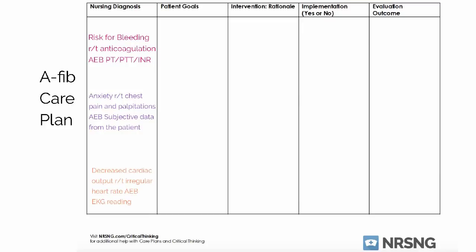The third nursing diagnosis is decreased cardiac output related to irregular heart rate, as evidenced by your EKG reading. Your EKG is going to show that the heart rate is irregular, and due to the fact that the heart is not beating as efficiently as it can, it's going to decrease the output.